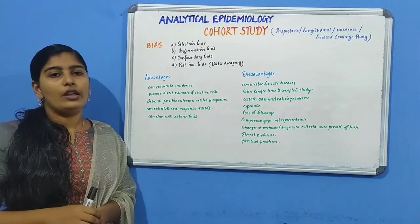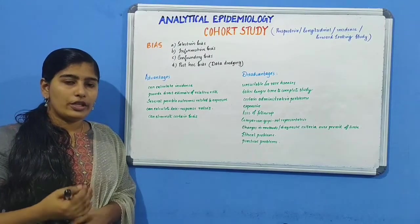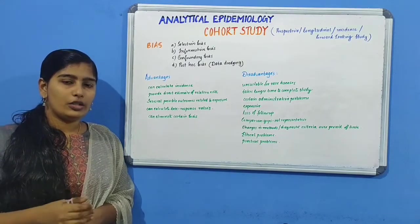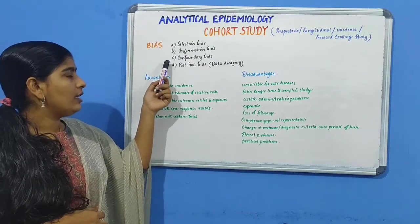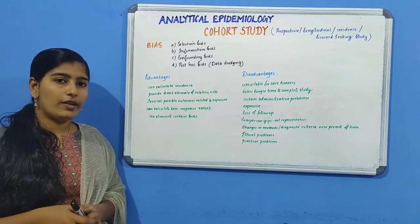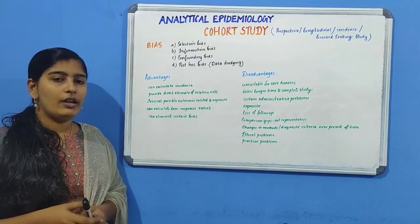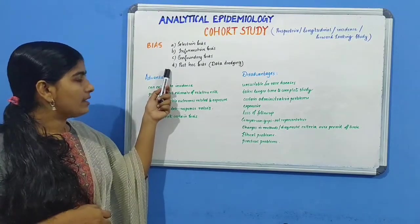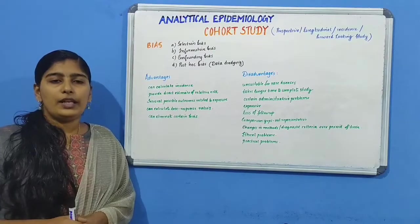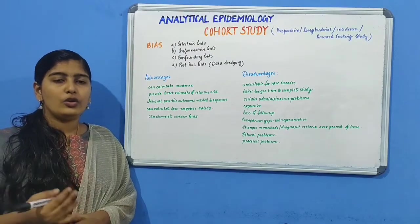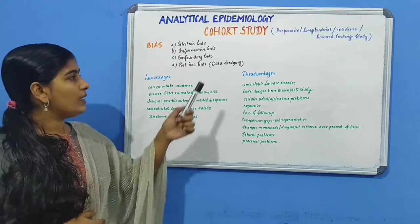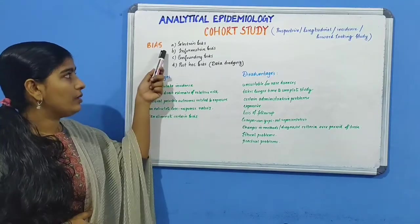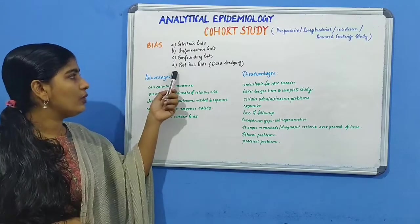Information bias includes diagnostic bias — if you already know the subject's exposure to a factor, you might proceed with more thorough diagnostic procedures. Confounding bias involves factors like age and smoking that act as confounders. Post hoc bias occurs when testing of hypotheses happens that were not originally selected for the study — this is referred to as data dredging. So the four biases are: selection bias, information bias, confounding bias, and post hoc bias.